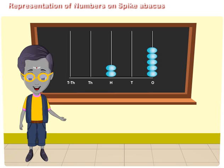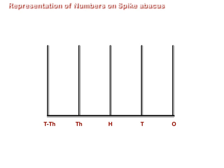Representation of numbers on Spike Abacus. We have learnt the representation of four-digit numbers on a Spike Abacus. A five-digit number, 13205, can be represented on the Spike Abacus as shown here.